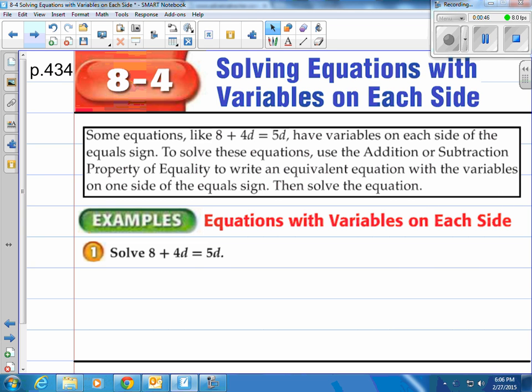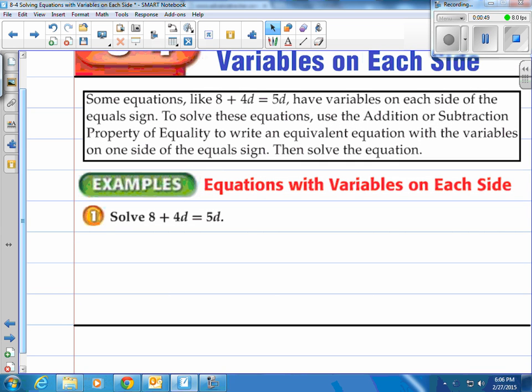So first things first, let's take a look at the one they gave us. What we need to do is isolate the variable on one side. So we need to move either the 4d to the right or 5d to the left. And the simple way to do this is find the one that has the most and then move the other to that side.